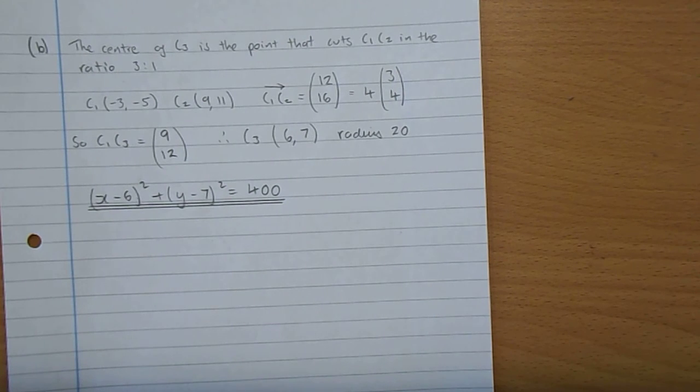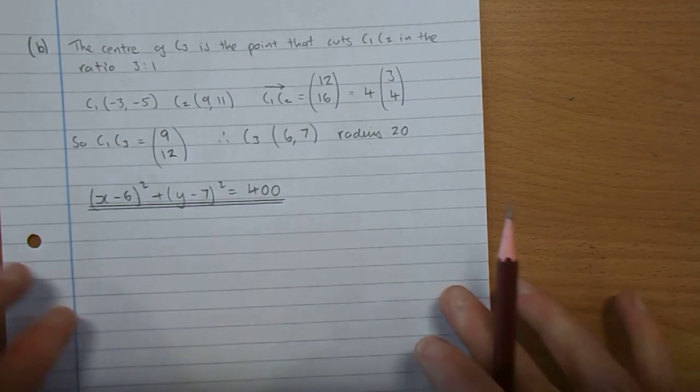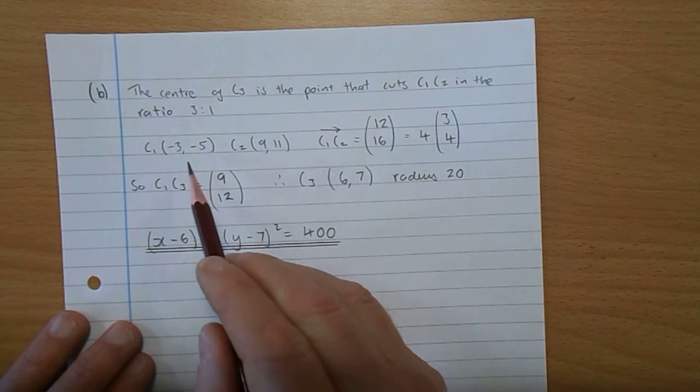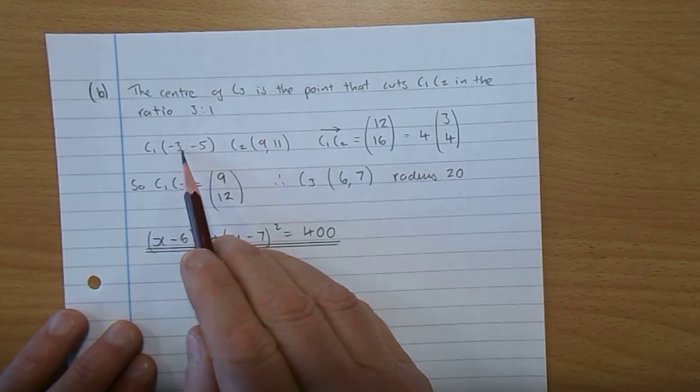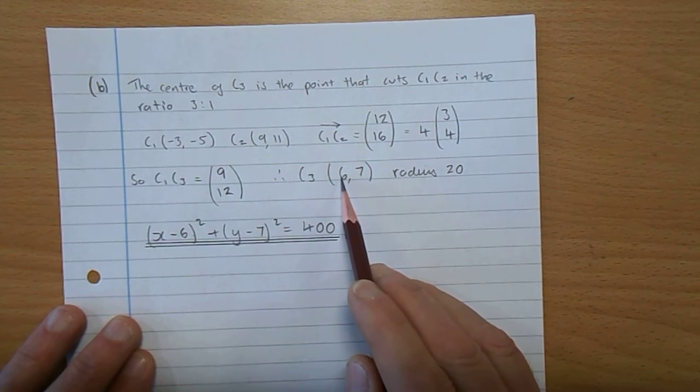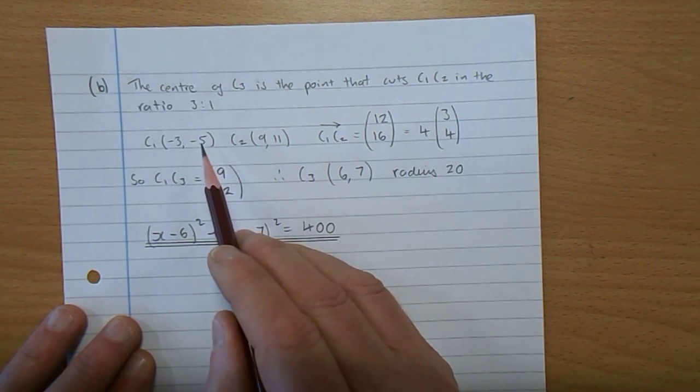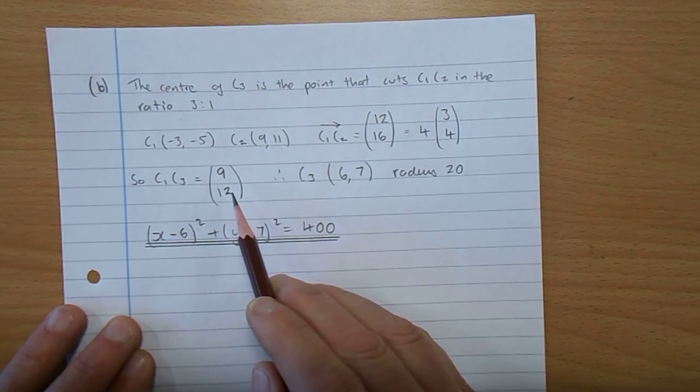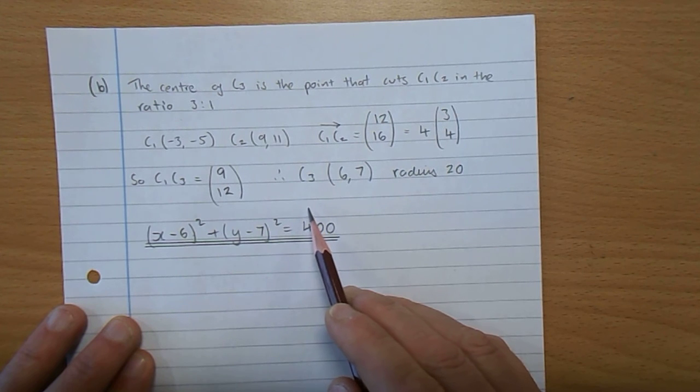So that means that C3 has to be 6, 7. Why? Well, if you start off at minus 3 and you go along 9, you're going to end up at 6.